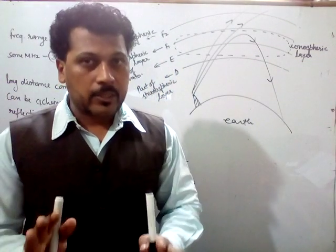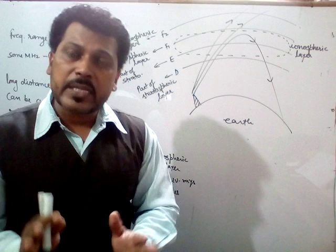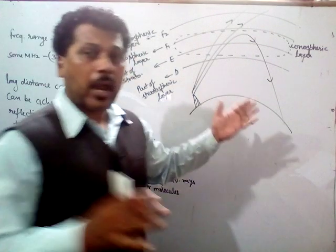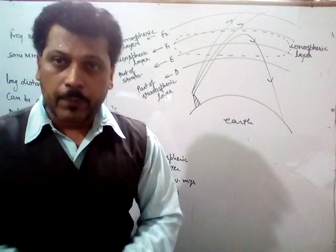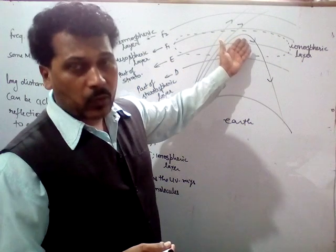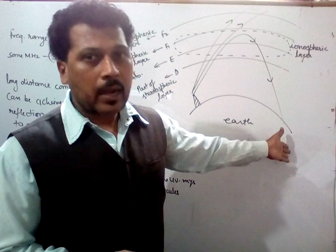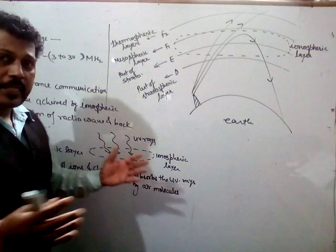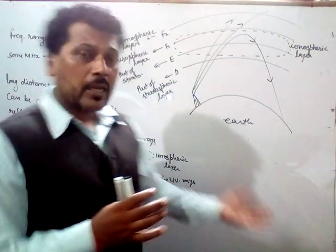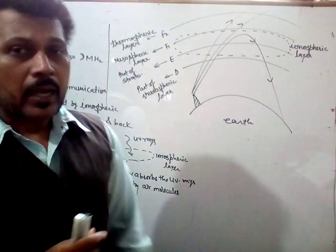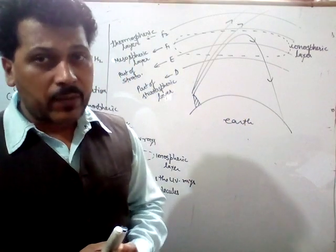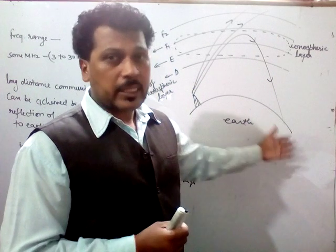The frequency of sky waves lies from 3 megahertz to 30 megahertz, and this is another mode of radio wave propagation. Whenever any wave is transmitted from the earth's surface, it gets reflected from the ionospheric layer and comes back to the earth. For long distance communication, this can be achieved by ionospheric layer reflection — that is, the ionospheric reflection of the radio wave back to the earth.